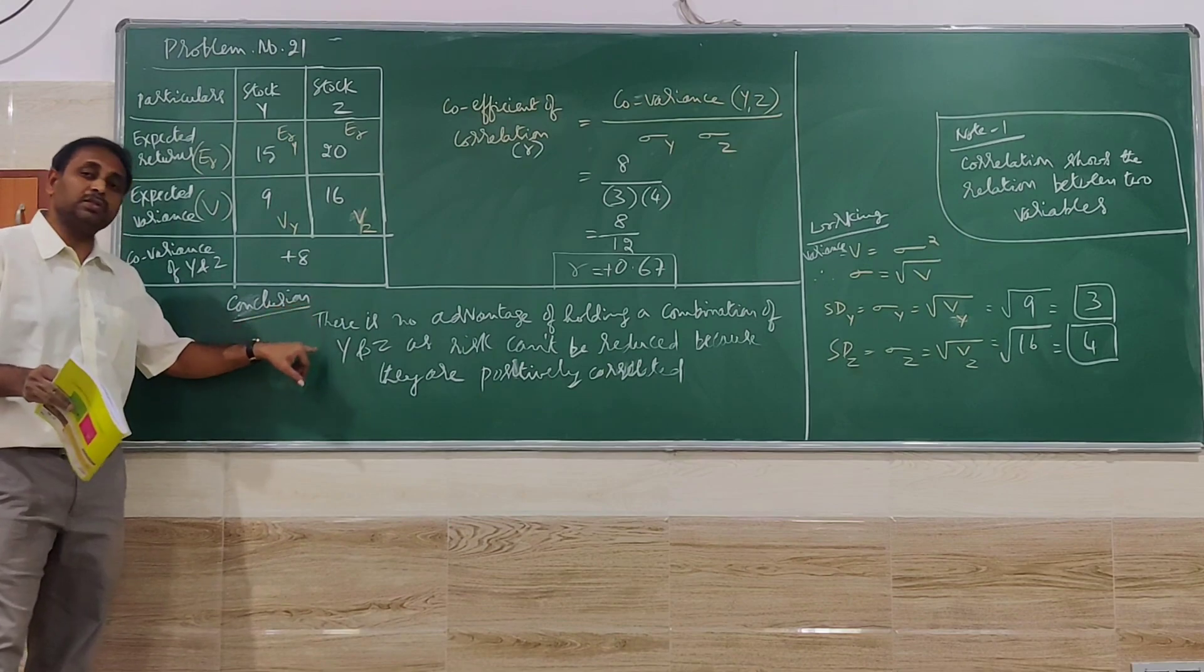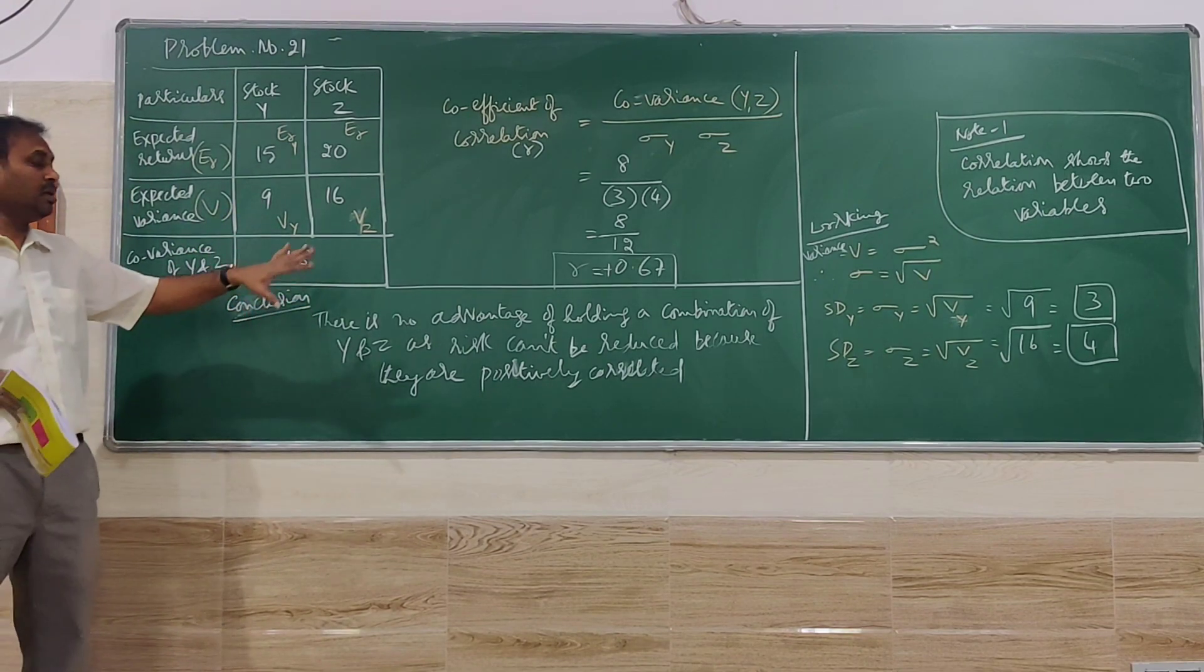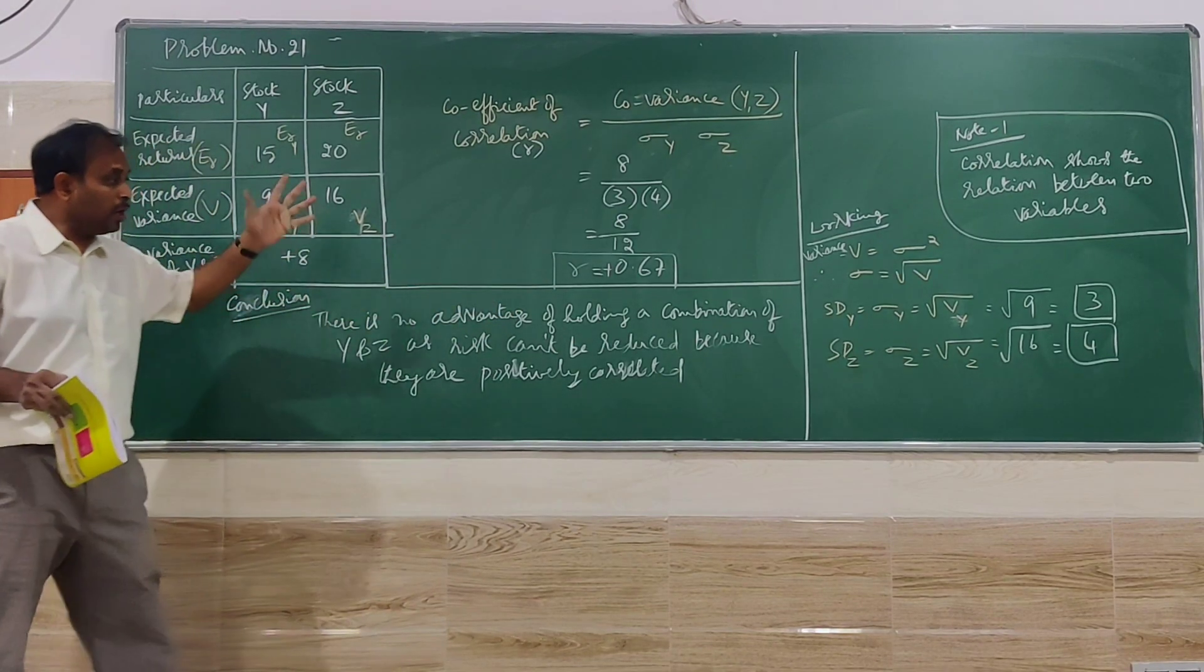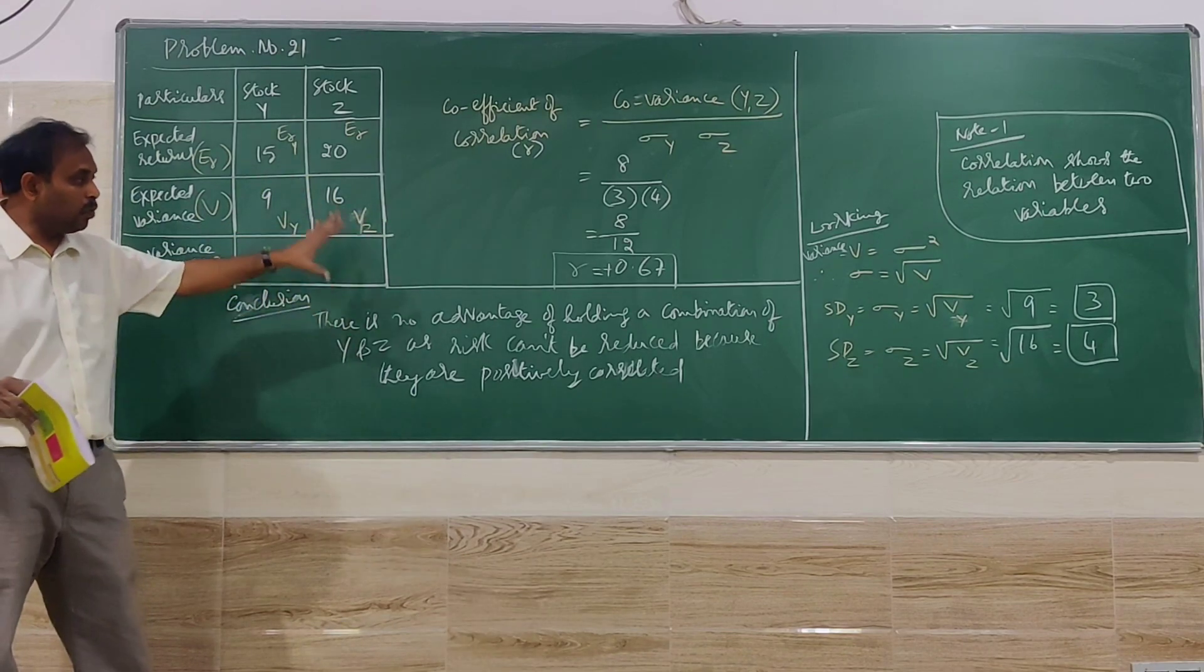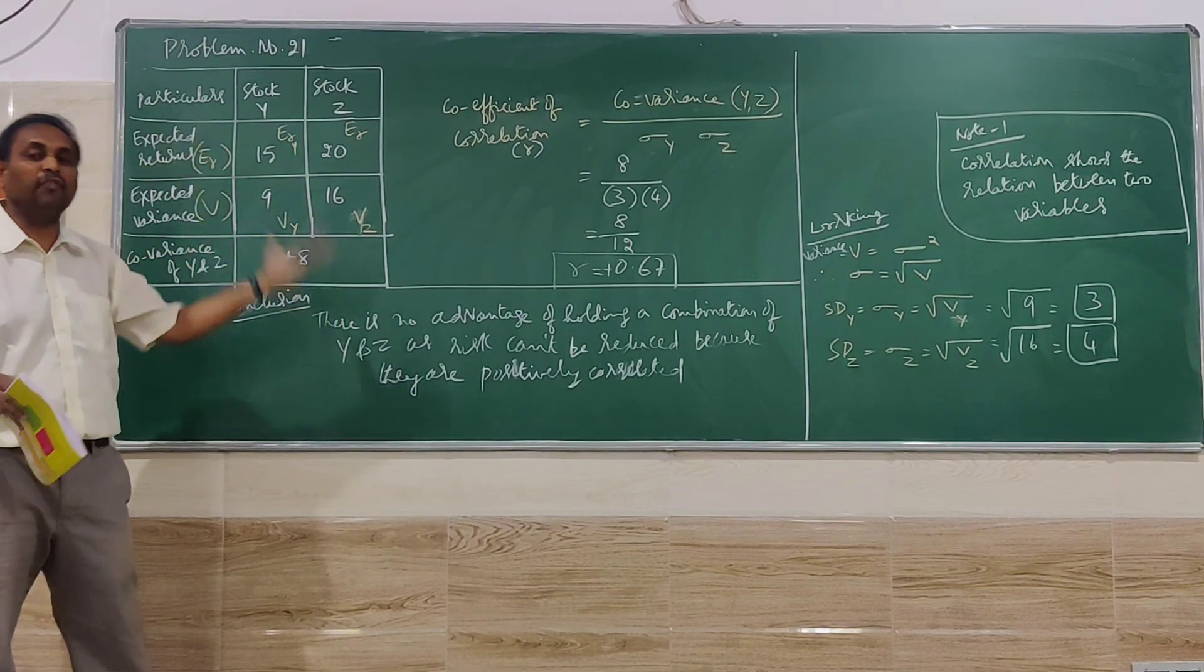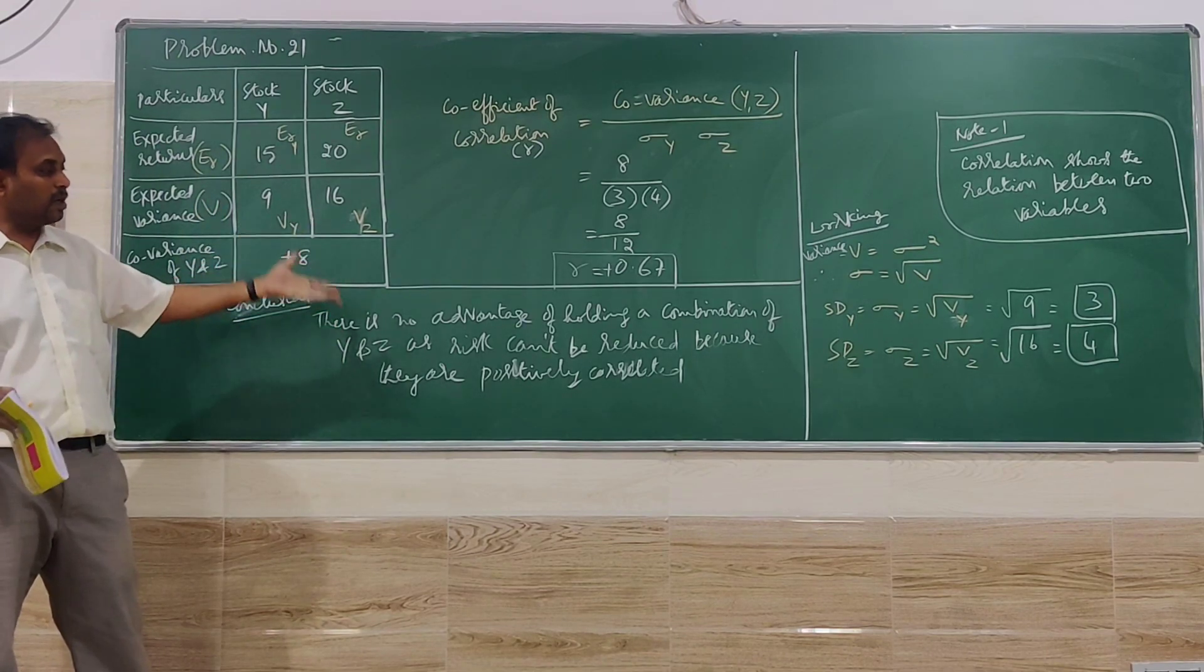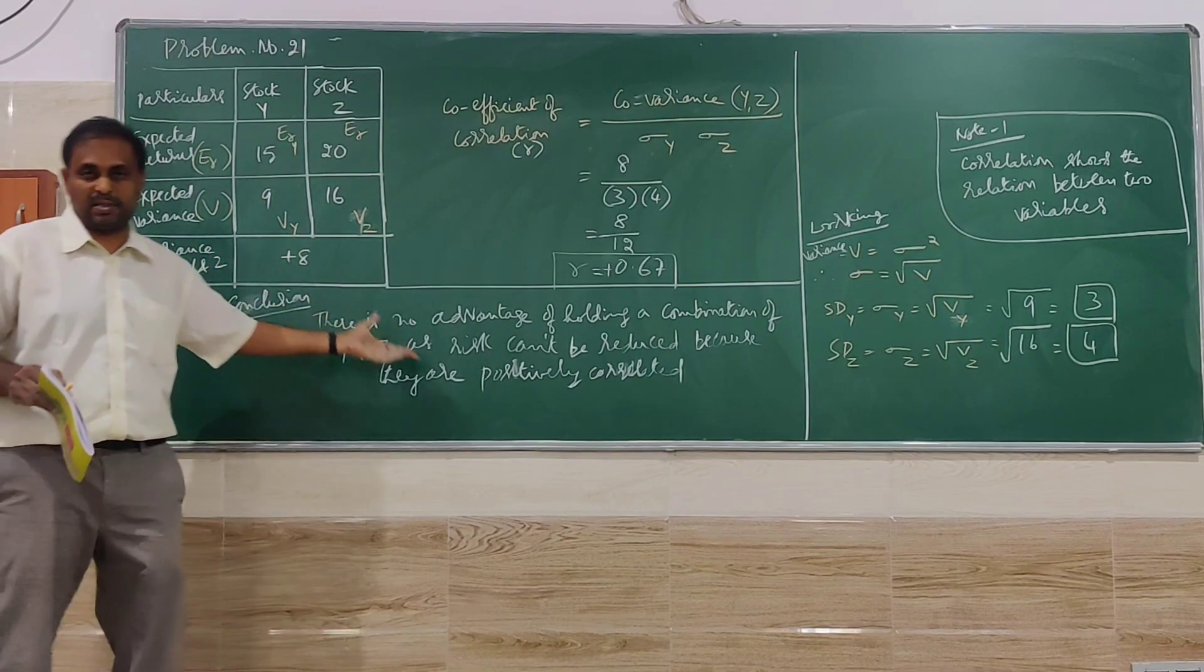But if they want to reduce the risk, they can also go for a different one because here if they find that they are related, if they want to reduce more risk, risk is there, SD is the calculation. If you want to reduce that, they have to go for a different combination, then they can go for a reduction of the losses, reduction of the risk.